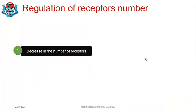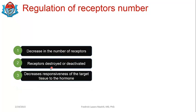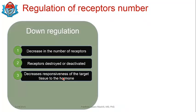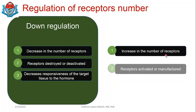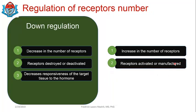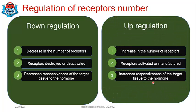So we have discussed two important biological scenarios: downregulation of receptors and upregulation of receptors. In summary — decreasing number of receptors occurs because receptors have been destroyed or deactivated, and the net effect is a decrease in responsiveness of the target tissue to that hormone: this is downregulation. On the other hand, an increase in the number of receptors is due to receptors being manufactured, and the net effect is an increase in responsiveness of the target tissue to the hormone: this is upregulation of receptors.